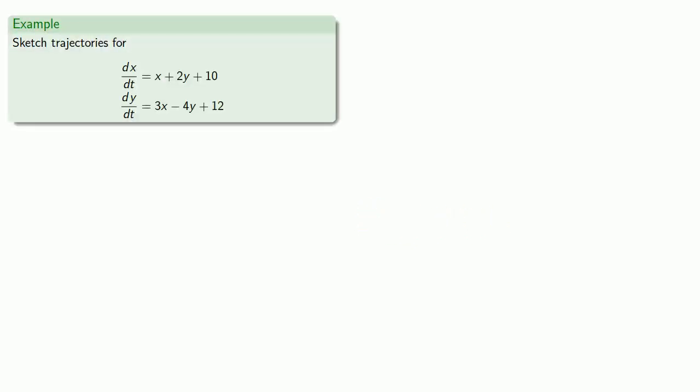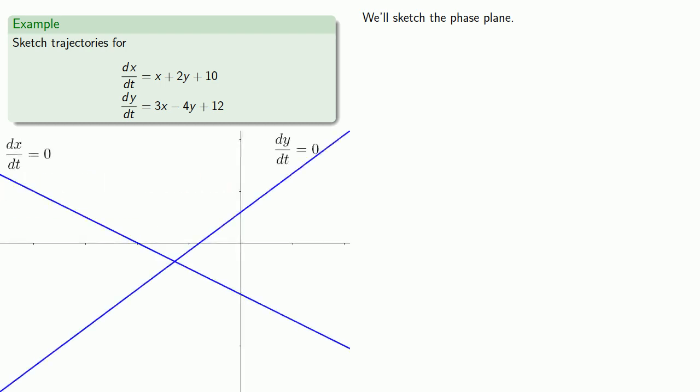So let's consider our system of differential equations. We'll sketch our phase plane. We'll sketch our two nullclines. Find the direction vectors on the nullcline. Find the direction vectors in each of the regions. And previously we sketched some trajectories. But now we have a little bit more information. We know how to find the eigenvectors. So let's do that.